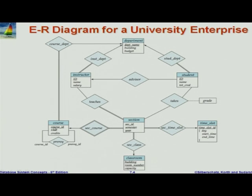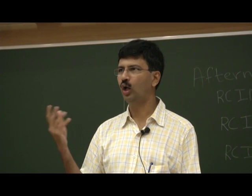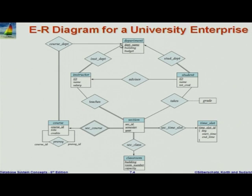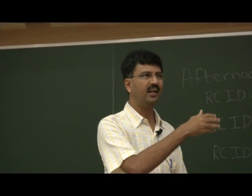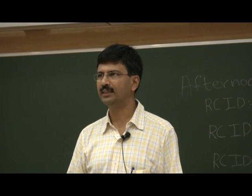Now let us come to course and section. Course is an entity - it has course ID, title, credits as before, but it does not have a department because there is a relationship course-department. Note a few constraints here. Instructor to department is double line - it is total, so instructor must be in a department. Correspondingly in the relational schema we should put NOT NULL. Because an instructor can have only one department, we could put department name as an attribute of instructor. Second, because of the total participation here, instructor must have a department, so we can say NOT NULL. This is where constraints in the ER diagram are reflected in SQL constraints which ensure that the database does not violate some basic property.